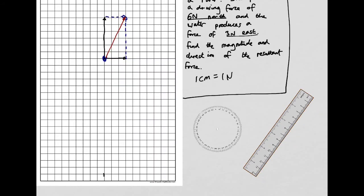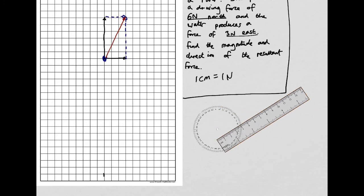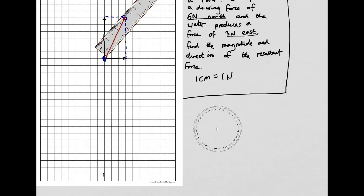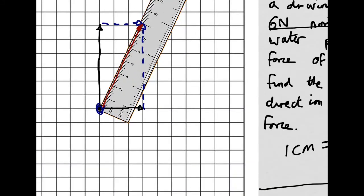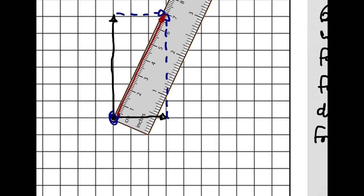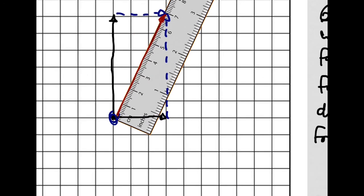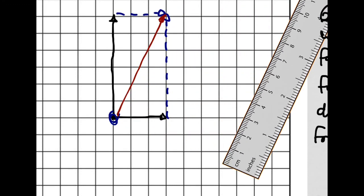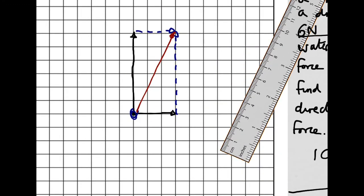If I wanted to calculate the exact size, I would use the ruler. It looks like about 6.9. Our scale factor is one centimetre per newton, so that's 6.9 newtons.